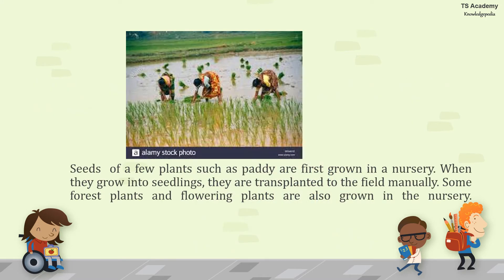A few plants like paddy are first grown in a nursery. When they grow into seedlings, they are transplanted to the field manually. Some forest plants and flowering plants are also grown in the nursery.